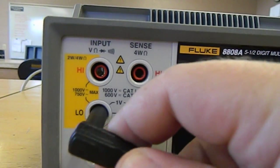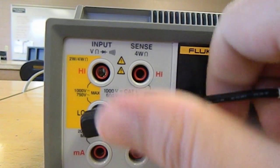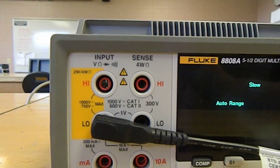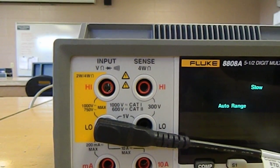You always are going to connect your common point where it says low. So you'll have your black probe or your black banana clip connected to low.